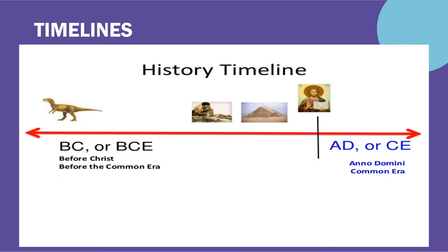A timeline is a record of the past. Timelines help us to keep track of important events.